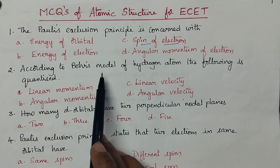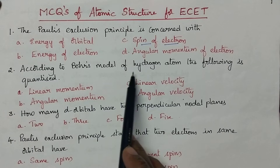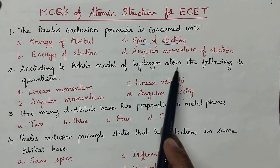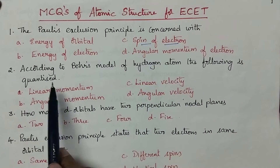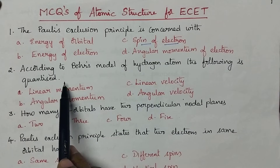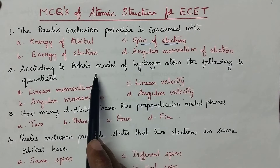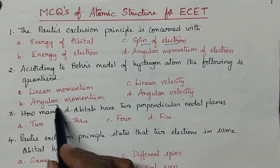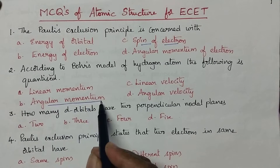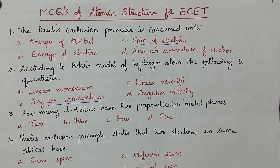According to Bohr's model of hydrogen atom, the following is quantized. According to Bohr's atomic theory, angular momentum is quantized.